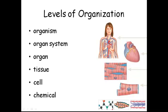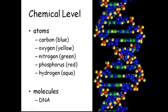So, if you put the right set of chemicals together, you get a cell. You put the right kind of cells together, and you get a tissue. You put the right kind of tissues together, and you get an organ. You put the right set of organs together, and you get an organ system. And you put the right set of organ systems together, and you get an organism. That's easy, right? We're going to start at the bottom and work our way up.